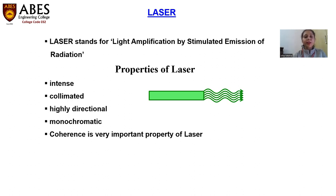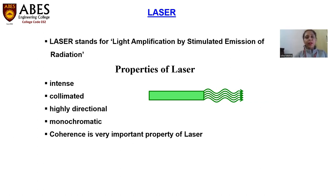The properties of laser which are extremely important: it's highly intense. The light beam of laser is focused at a particular direction. All the photons are concentrated in a particular direction — there is no deviation. That's why the light is highly intense.